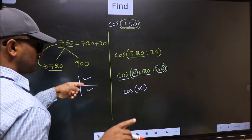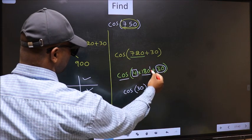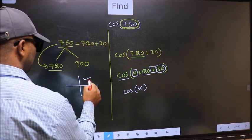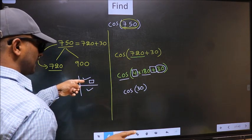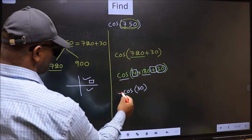So now to select the quadrant, we should look at this symbol. Here we have plus. That means the angle lies in the first quadrant. And in the first quadrant, cos is positive. So we should put plus.